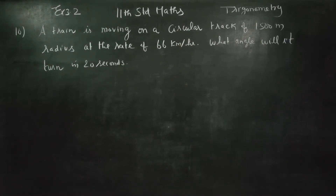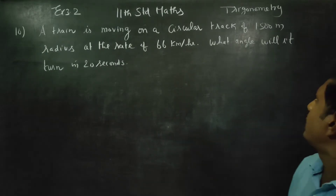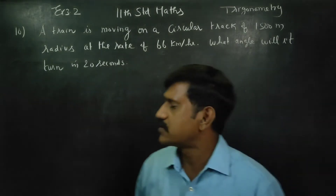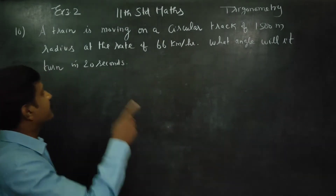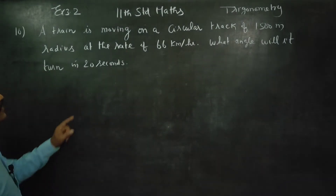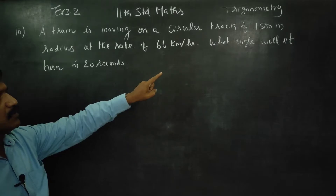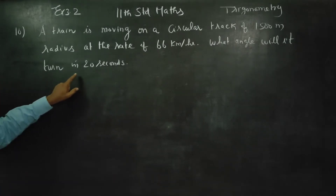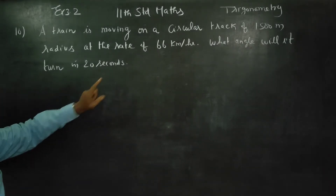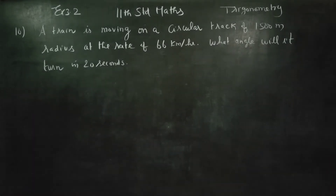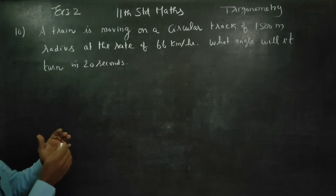Hello Learn Standard Students, I am Metro Karnagaran, and this is exercise number 3.2. A train is moving on a circular track of 1500 meter radius at the rate of 66 kilometers per hour. What angle will it turn in 20 seconds?